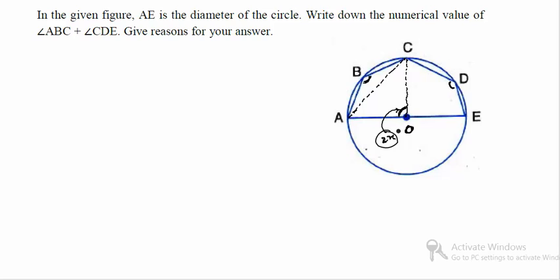But if you look at the angle subtended by this chord at the circumference, you will have to join CE also. Let us join C and E. So now, angle CEA is the angle subtended by the chord AC at the circumference. Using the property that angle subtended by the chord at the center is twice that of the angle subtended by the same chord at the circumference, we can say the value of angle CEA should become X.